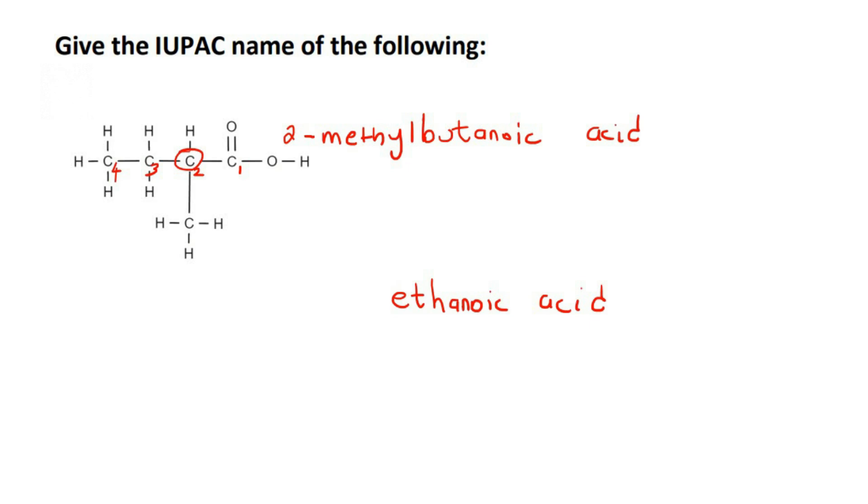You don't have to say which carbon the functional group is on, because on carboxylic acids, it is always on carbon number one. And so this would be the name, 2-methylbutanoic acid.